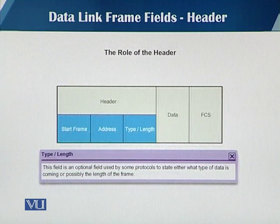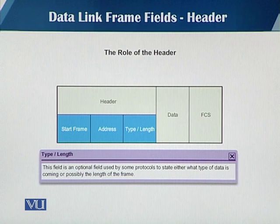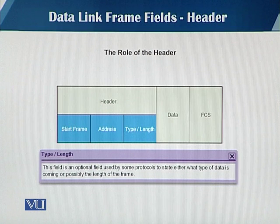The third subfield in the header is the type or length field. It is an optional field used by some protocols to state either what type of data is coming or possibly the length of the frame.